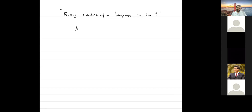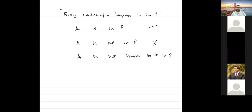What we can say most of the time is that A is not known to be in P. We do not know whether A is in P or not. So let's see some problems for which we are not sure whether they are in P or not.